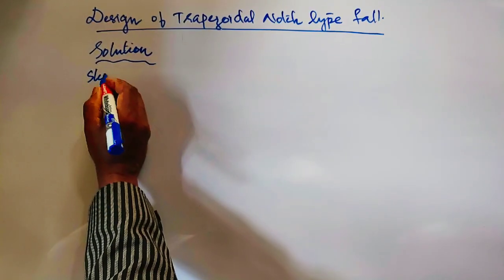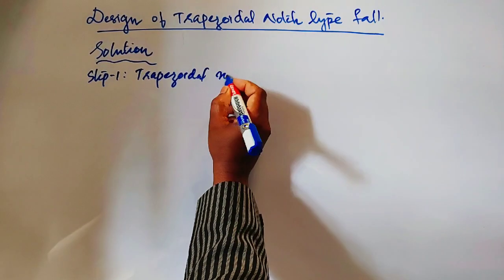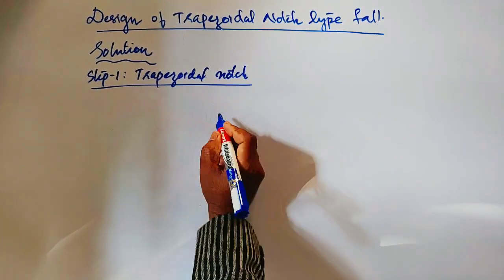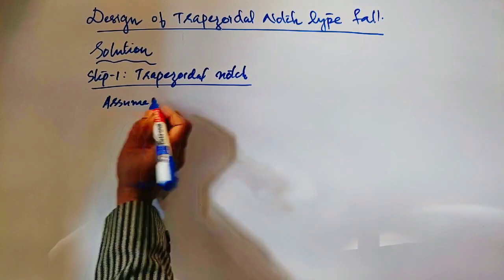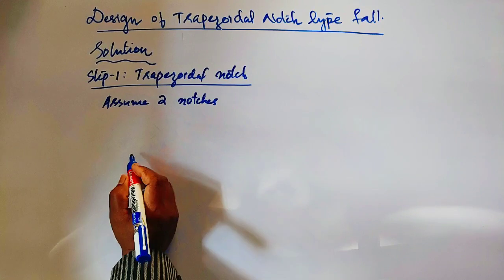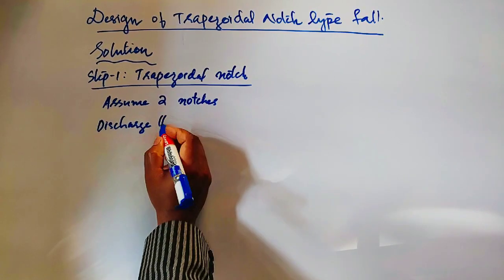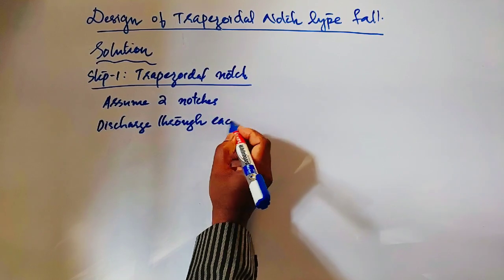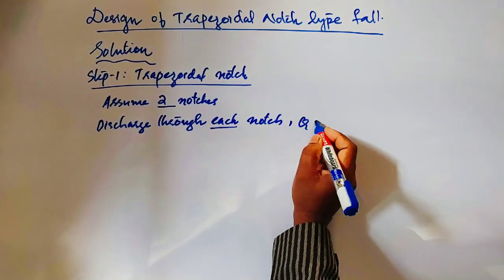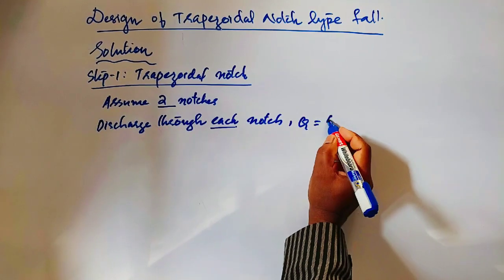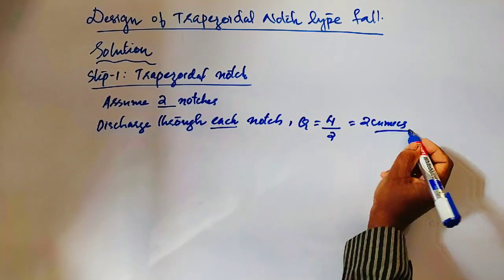Step 1: Trapezoidal notch dimensions. Assume a minimum of two notches. The discharge per notch: total Q_max = 4 m³/s divided by 2 notches gives Q = 2 m³/s per notch, that is 2 Q_max.